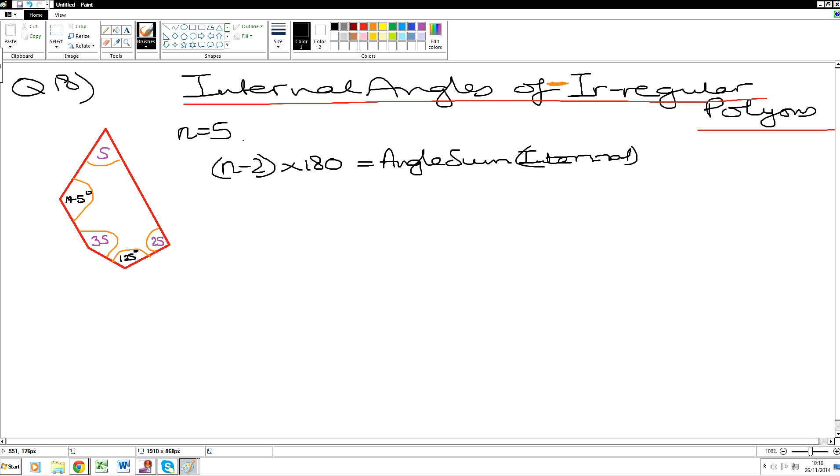Okay, so what is N? N has a value of five-sided shape. So 5 minus 2 is 3 times by 180. Now if you want to do 3 times by 180 in your head, 3 times by 100 is 300, plus another 240. So that gives us a total of 540 degrees.